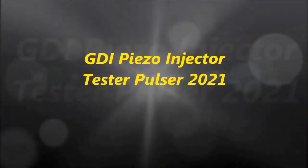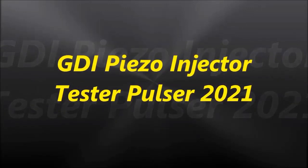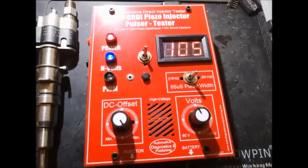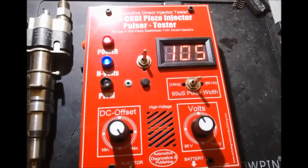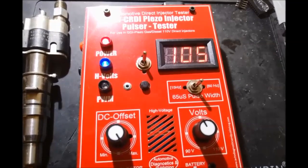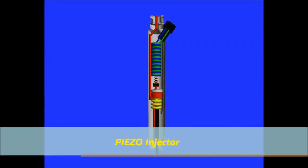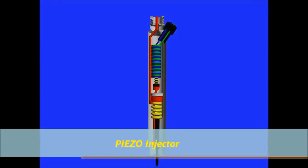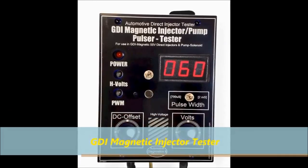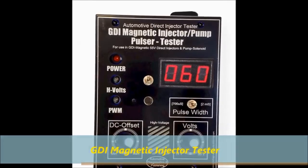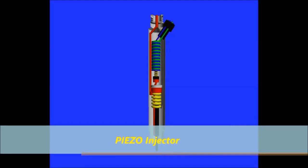Hello everybody and welcome to another video. In today's video, we are going to briefly talk about the GDI PISO injectors and the PISO injector tester. The PISO injector tester was developed by our company precisely to test these injectors. This particular tester is good for GDI diesel injectors and also for gasoline injectors, like the ones seen on BMWs and some of the European ones. We also have a magnetic injector tester covered in another video on our channel ADP Training. Here on screen is an animation showing the operation of these injectors — the internal operation.